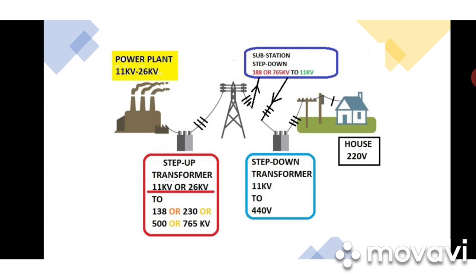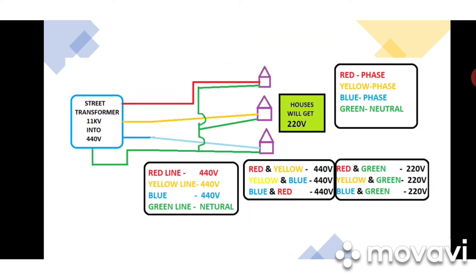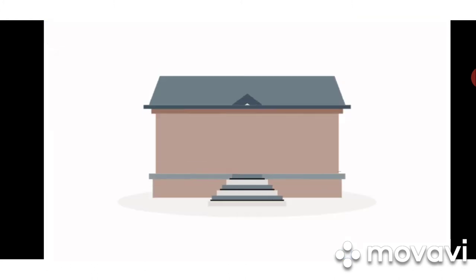They reduce from 11 kV — 11,000 volts — down to 440 volts. From the street transformer, the output comes as three phases: red, yellow, blue, each having 440 volts, plus one neutral also taken from the transformer. Each home gets one neutral and only one phase — not two phases. One phase and neutral together gives 220 volts. This is how you get electricity to your home.